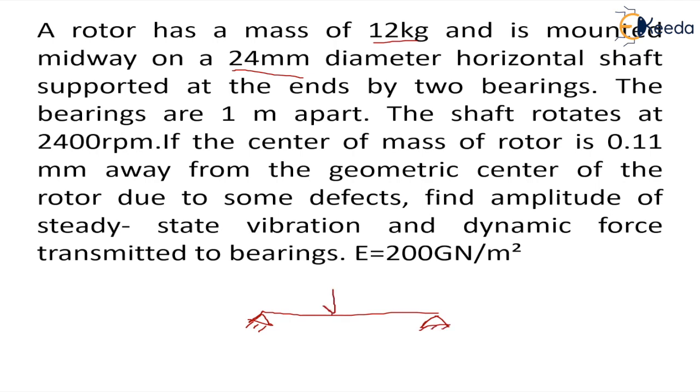We can consider that the mass of rotor is acting like this. The bearings are one meter apart, so the length of the shaft is given as one meter, and the shaft rotates at 2400 rpm.